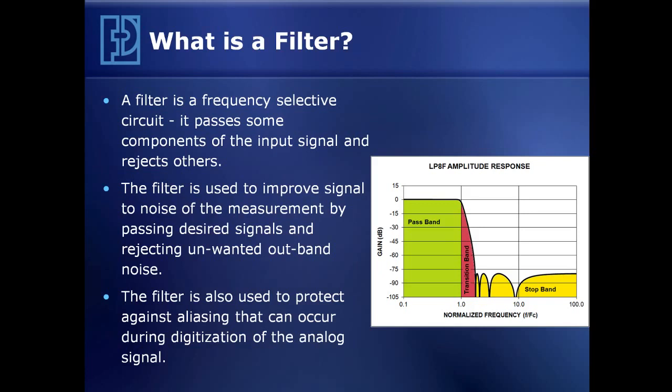The components of a filter are shown in the chart here. In the green portion, that's called the passband of the filter — that's where we want the signal of interest to lie. The red portion is the transition region, where we're moving in amplitude response from the passband to the stopband. The stopband is where we want the energy we are not interested in to lie, and it will attenuate that unwanted noise with a minimum level of attenuation.